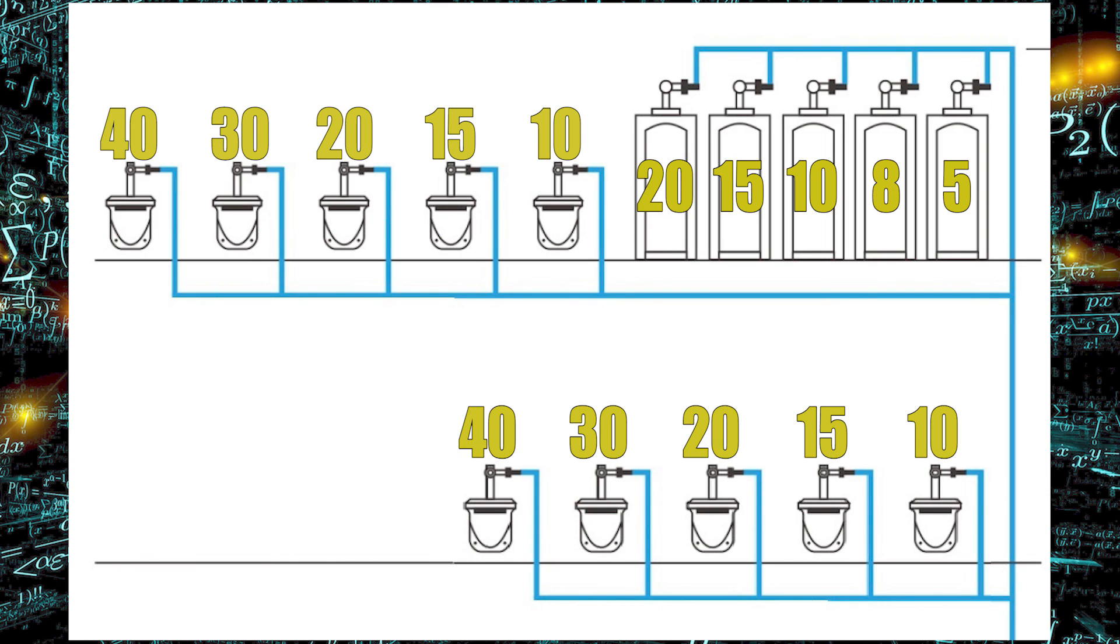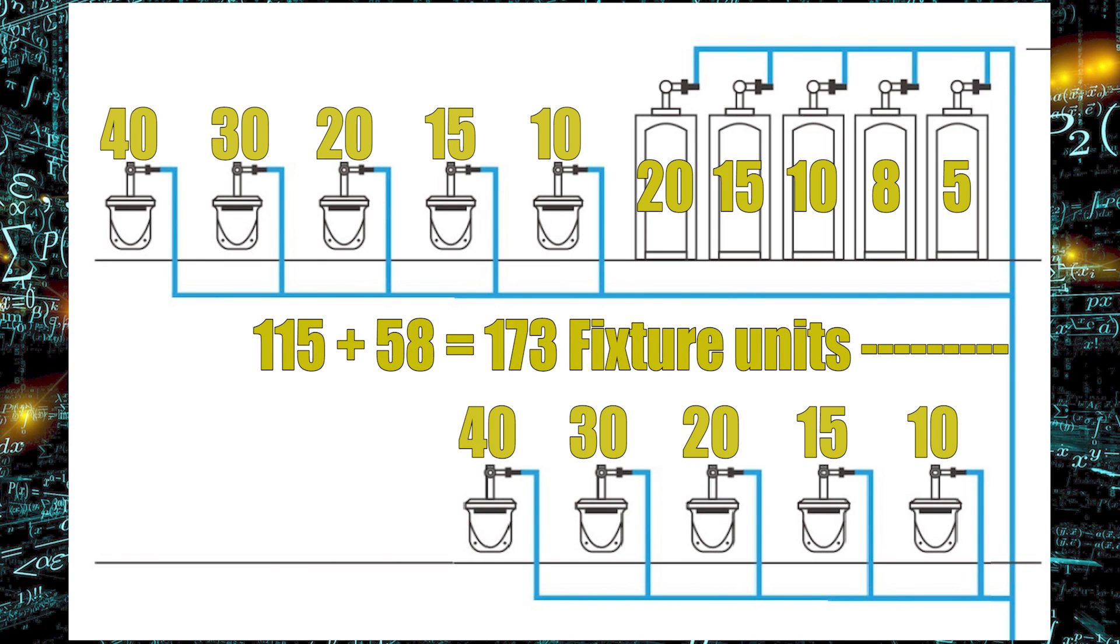Now the upper floor is not going to be anything special. Looking at the water closets, we start at 40, then we have 30, 20, 15, and 10. The urinals, once again, 20, 15, 10, 8, and 5. So we're just going to add all those up for this common pipe down here, and we're going to get 173 fixture units right there.